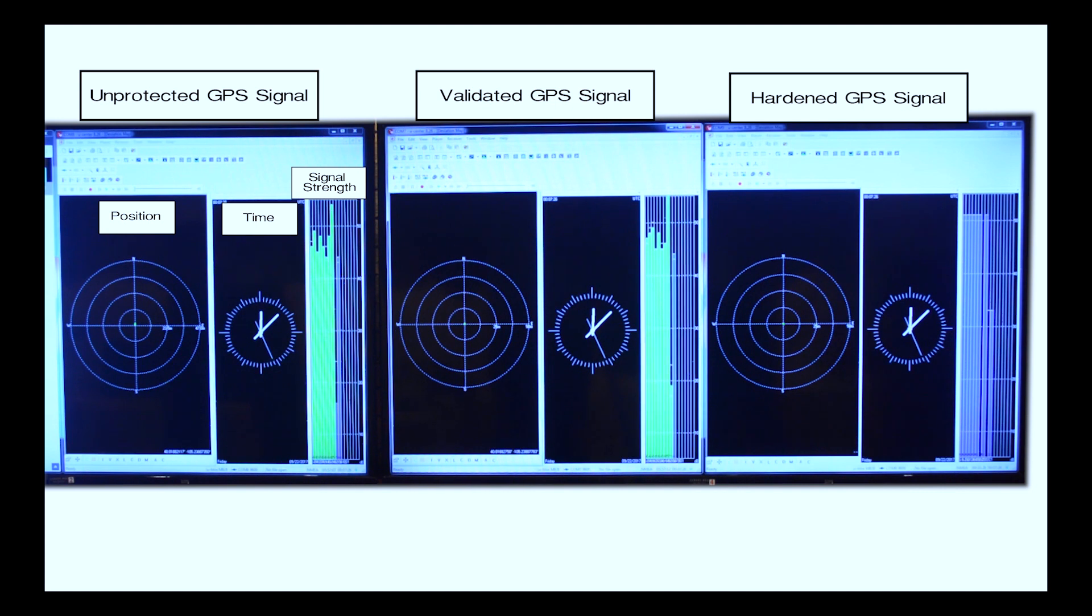In the third console, we're showing position, time, and again the strength of the satellites, but this time of the hardened output coming from the blue sky GPS firewall. You'll notice in the case of the hardened output, although the time aligns with what you see in the validated and the unprotected windows, the strength of the satellite is quite strong and consistent.